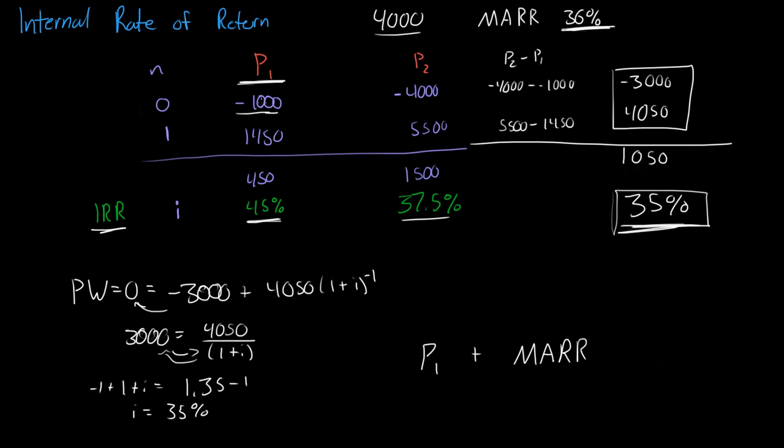We're investing in an additional $3,000. Is that additional $3,000 to get us to project 2, is that $3,000 really worth it? And that $3,000, when we invest it into project 2, is only worth 35%. So, it's much better to invest in project 1 and invest that $3,000 somewhere else where we can get a rate of return of 36%.